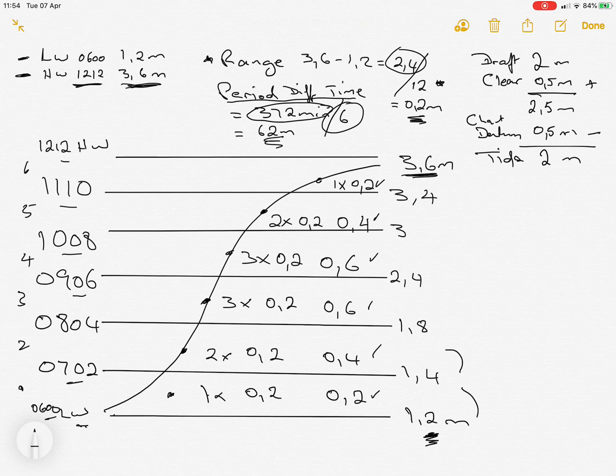Now, why do we do all of this? Because we want to know when we can enter an area that has a certain amount of water. Say our draft is 2 meters, we want clearance below of another 0.5, so we need total water of 2.5 meters. We look at the chart and see it already has 0.5, so we need 2 meters of tide.